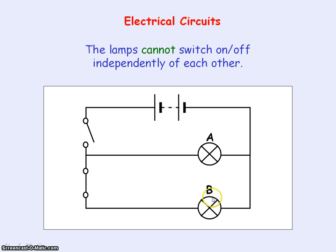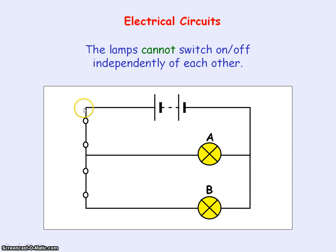In order for B to light up, we'd also need to close the top switch, but as a result lamp A will also light up because you've got the complete circuit loop to light up A, and then you've got the second circuit loop that lights up B. So you can see that lamps A and B are not working independently of each other.